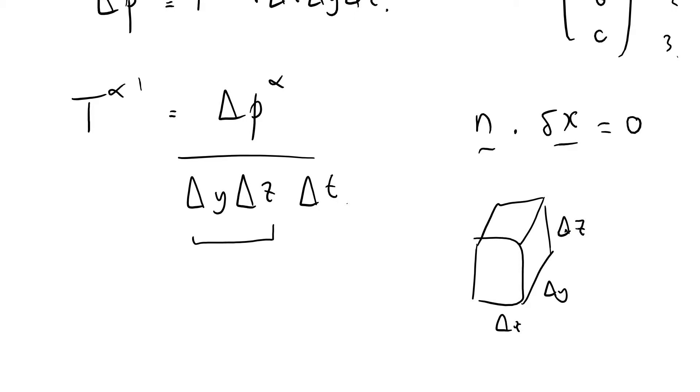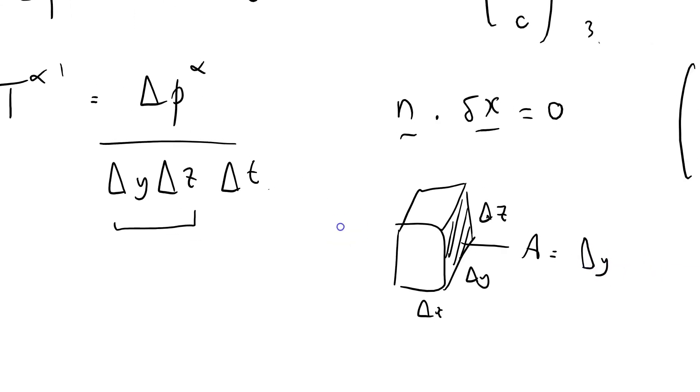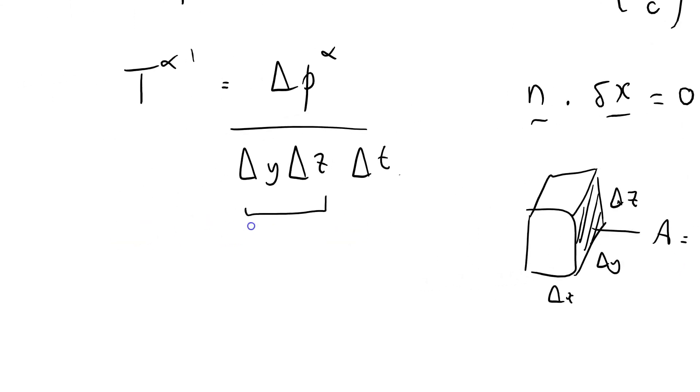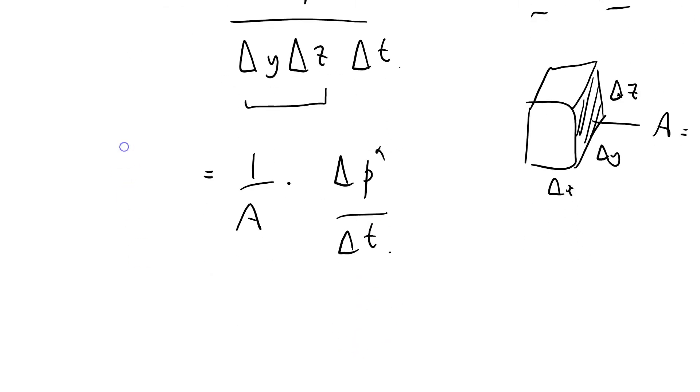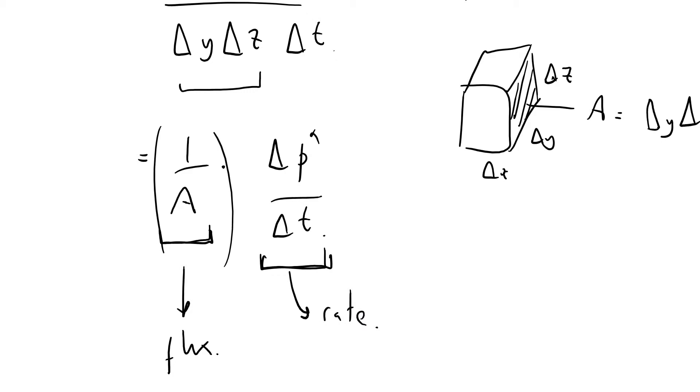That area there is going to be delta y delta z. So it's going to be 1 over the area times delta p alpha over delta t. So it's per unit area and per unit time. So this term here means that we're dealing with a flux, and this here means we're talking about a rate.